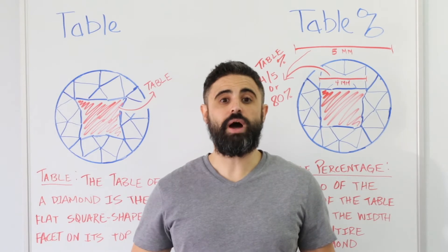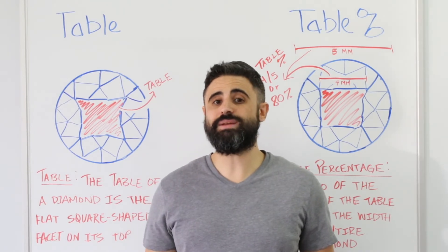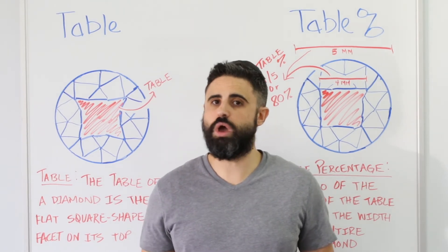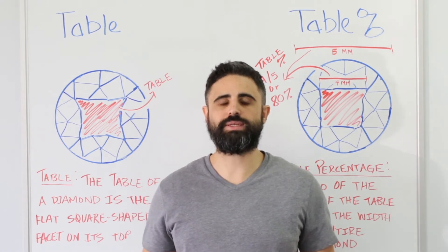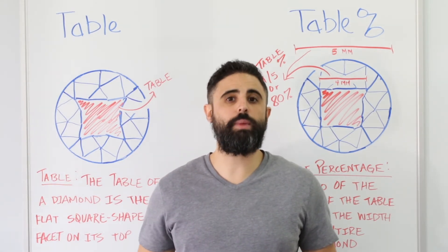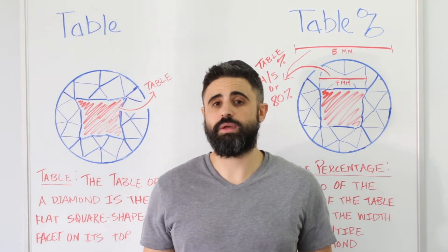Does a bigger table or table percentage make a diamond appear larger? No. The table has little to no effect on the size of the diamond. The actual diameter measurements of the diamond determine its size.